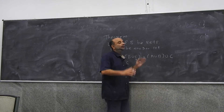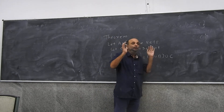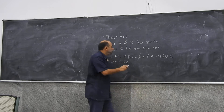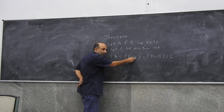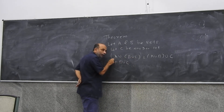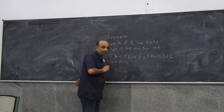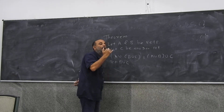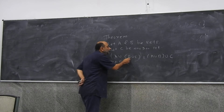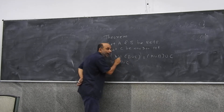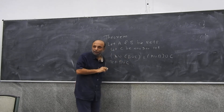A union B union C is a set of elements which belong to either A or B or C, or to both B and C, or to A and B, or to all three — A, B, and C. A set of elements belonging to B or A or C, or to B and C, or to A and B and C. This is what is meant by A union B union C.